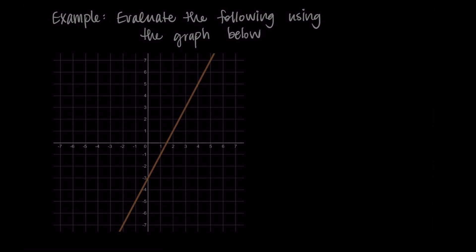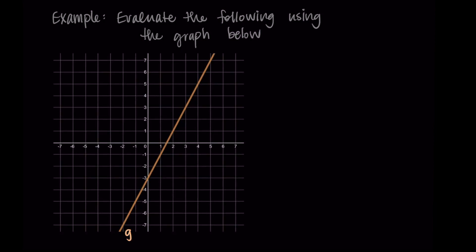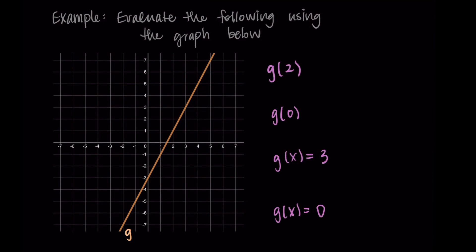This example had us using the function with the function notation and the equation written out. Now I want to do one more example, this time with the graph. Let's evaluate the following with the graph here. Let's say this function is g. I want us to find g(2), g(0), and then solve g(x) = 3 and g(x) = 0.